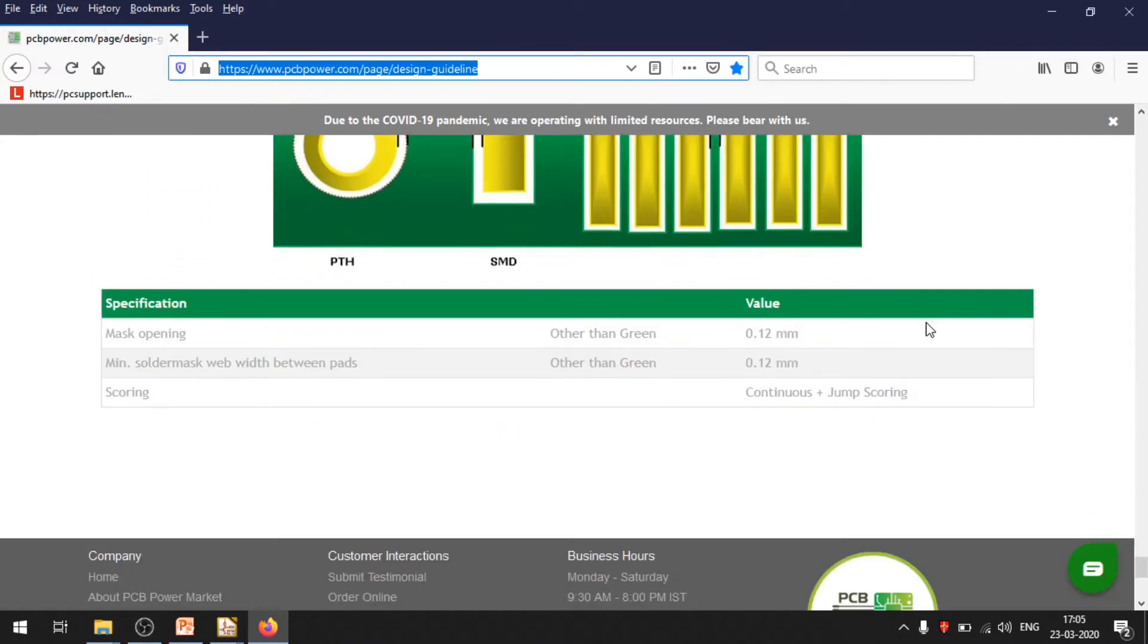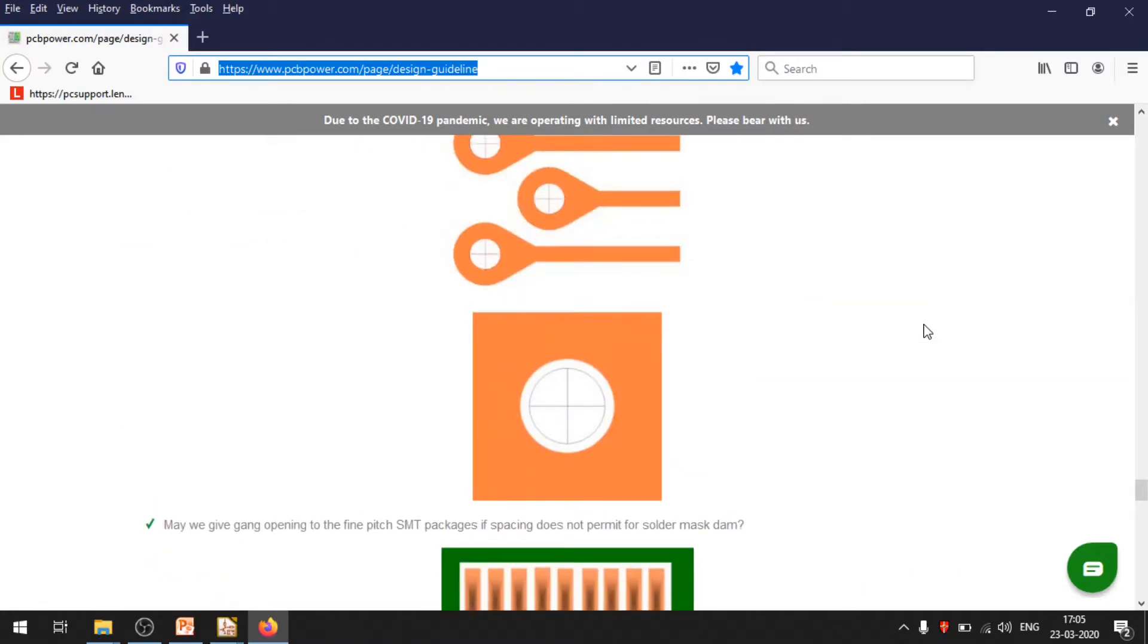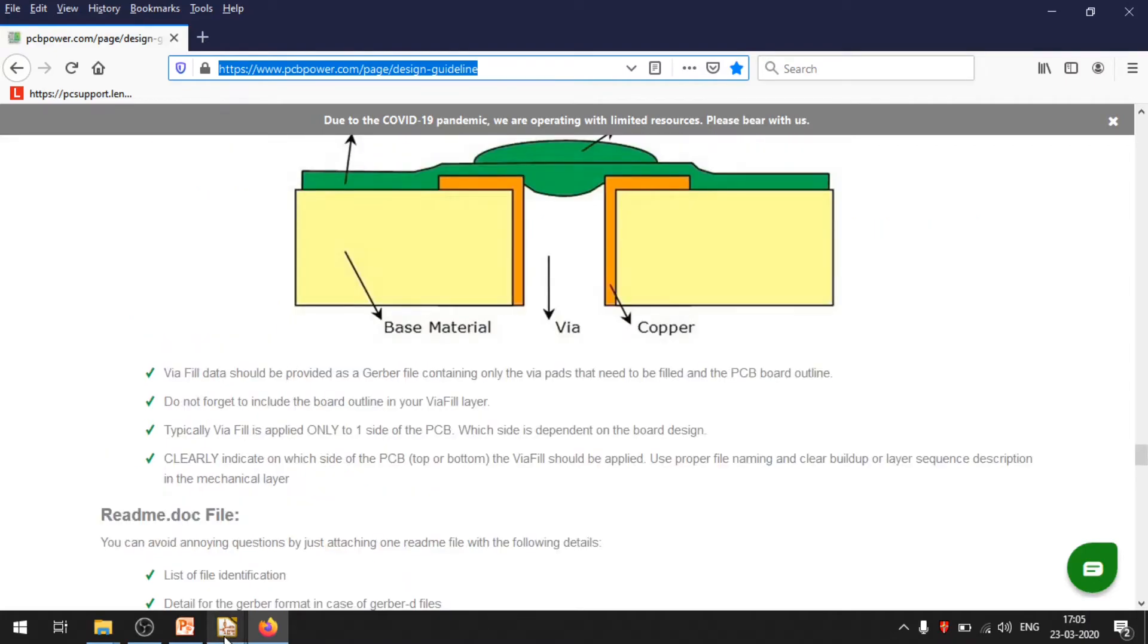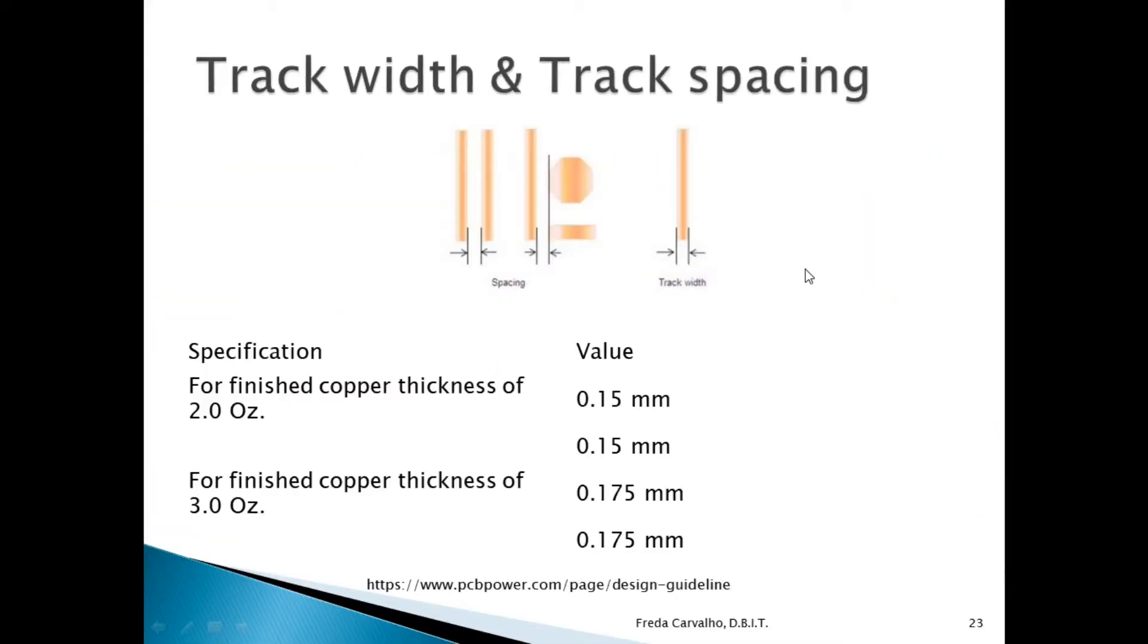There are many other requirements. I have picked it up from this website, and you will see I have just put that for you to see what we are going to use. The track width, if it's a 2 oz copper board that you are looking for, is around 0.15 mm. The track spacing is 0.15 mm. You can see here, the track spacing minimum requirement is 0.15, below which they will not be able to do it. And the minimum track width that they could print is 0.15 mm, below which they would not be able to print for you.